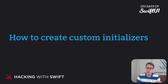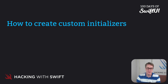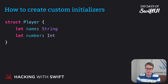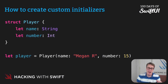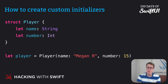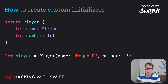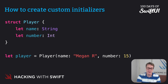Let's start by looking again at Swift's built-in initializer. Here we have a struct called Player with a constant called name of type String and a constant called number of type Int. We can then make an instance by saying: let player = Player(name: "Megan R", number: 15). This makes a new player instance by providing values for those two properties in the order they were defined. Swift calls this the memberwise initializer, which means it accepts each property in the order it was defined in the struct.